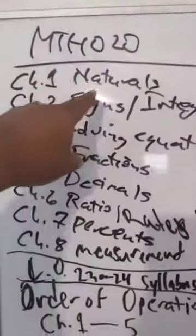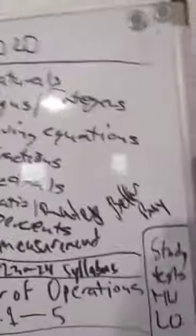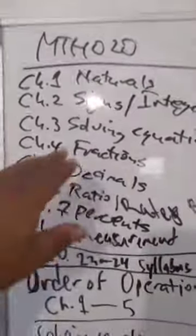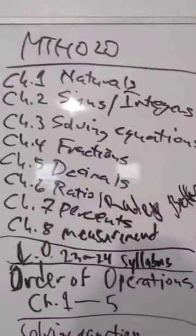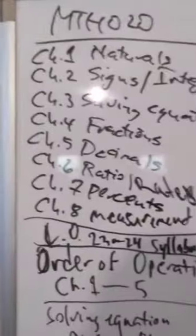So Math 020 in a nutshell is this right here. First in Chapter 1, we covered natural numbers and all their operations, right? Add, subtract, multiply. We did order of operations. Then we covered Chapter 2, which is the signs or the integers, all the negative numbers. Then Chapter 3, we solved equations for x and we did expressions and distributive properties.